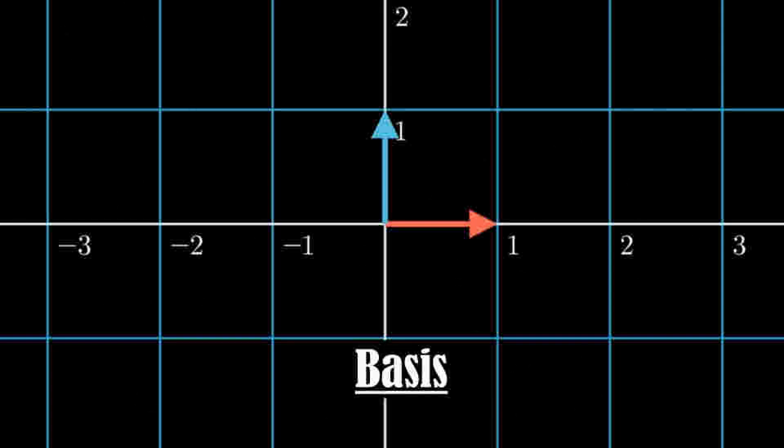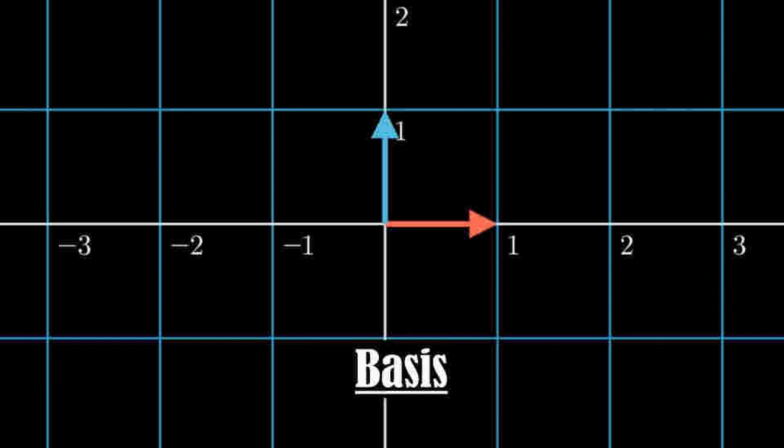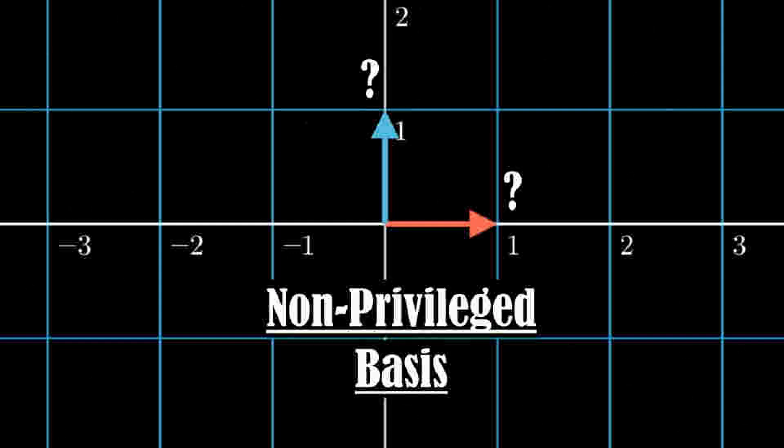Certain neural network architecture layers have a privileged basis, meaning that these neuron axes are more likely to correspond to just one feature. For example, N1 may be a body, and N2 may be a head. In a privileged basis, neurons are more likely to be monosemantic. But for many language models, their intermediate layer neurons are polysemantic. Thus, they have a non-privileged basis, meaning that their neuron axes do not correspond to a feature, making them harder to interpret.